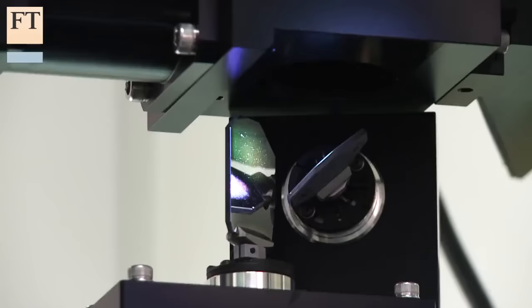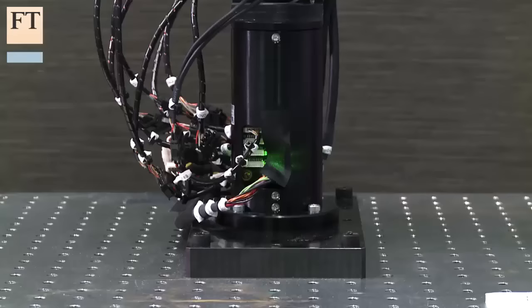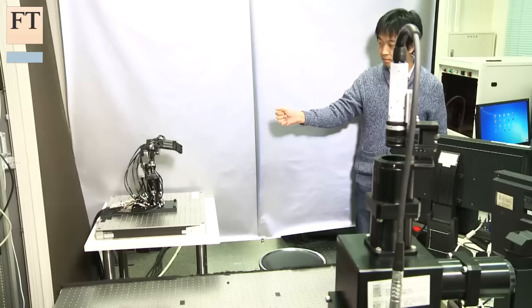25 years ago, Professor Ishikawa started work on what is currently the world's fastest high-speed image processor. 15 years ago, he started research on the world's fastest actuator. Together, 40 years of research have resulted in this, a robotic hand.